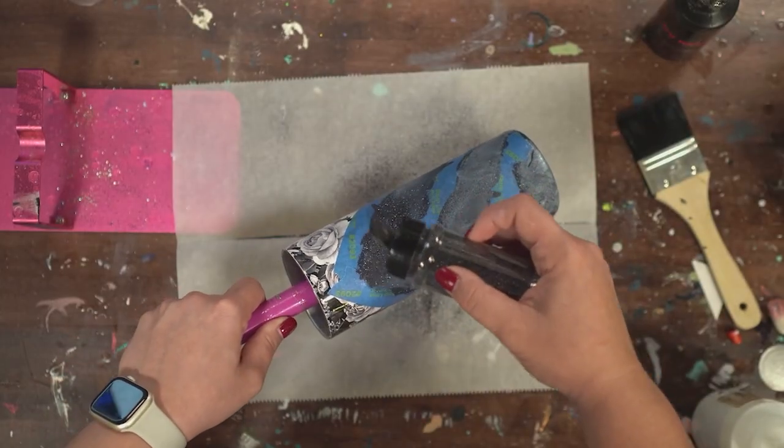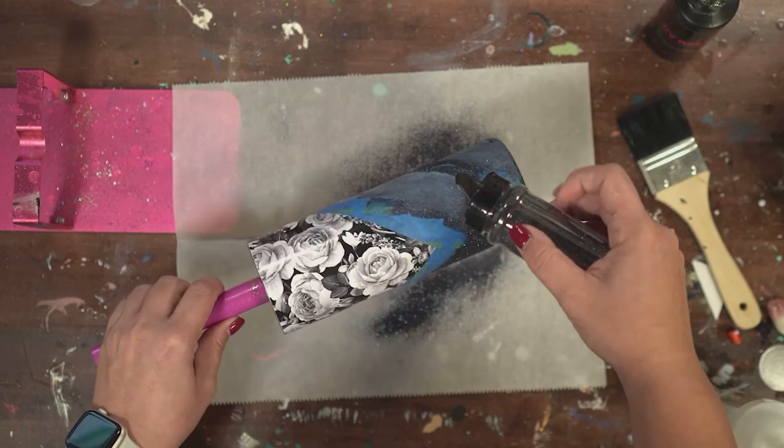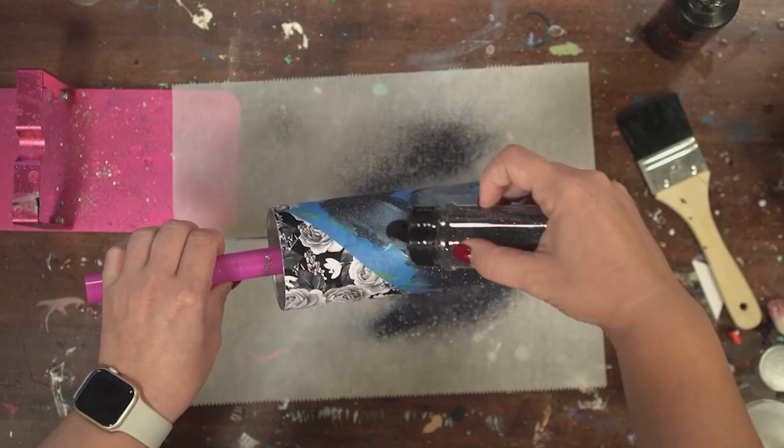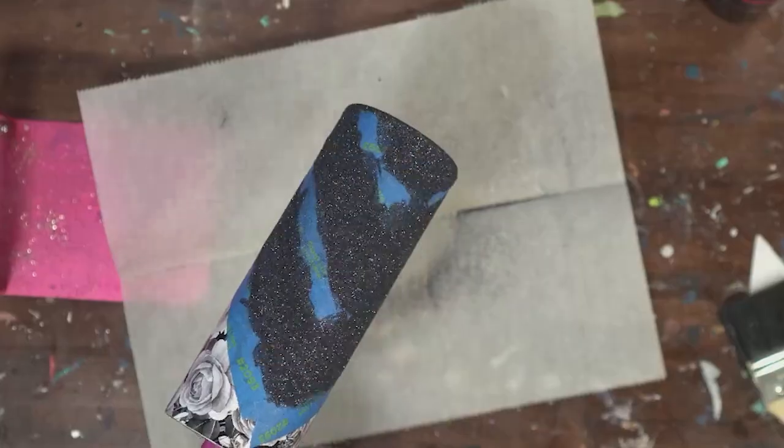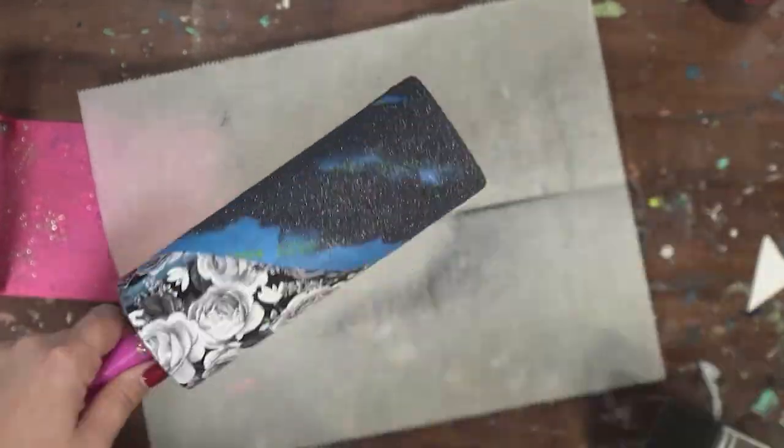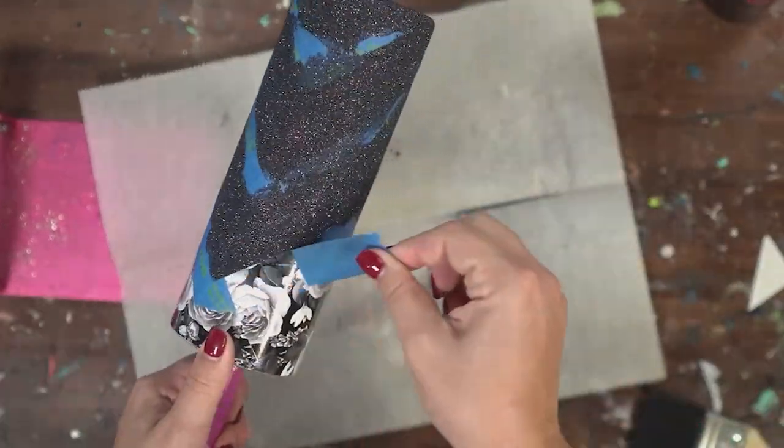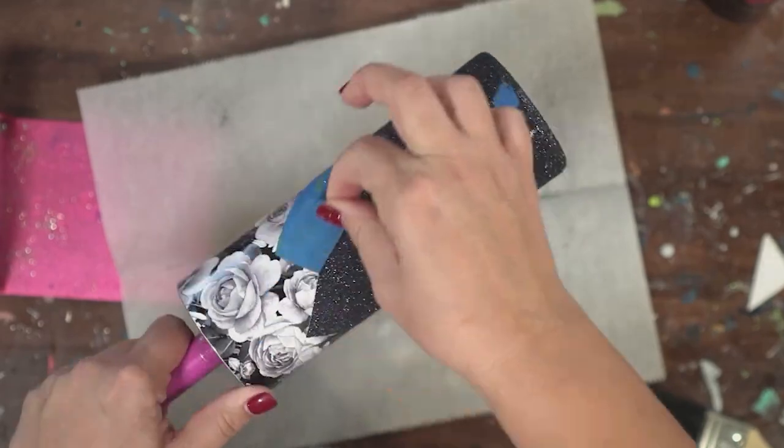I just brushed over the glitter, smoothed it out and then applied my glitter right on top of that wet glitter glue. Let that dry for two hours and do another dry brush.